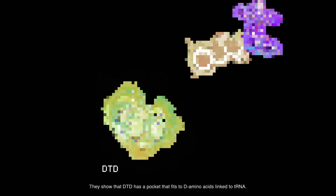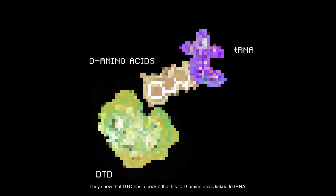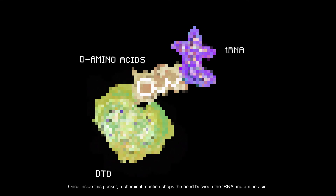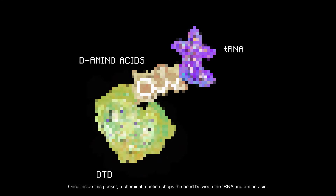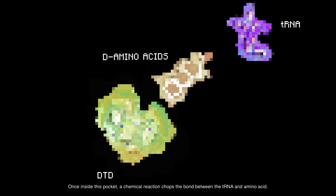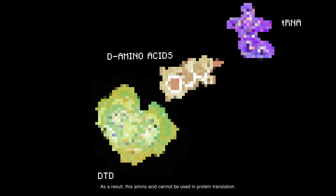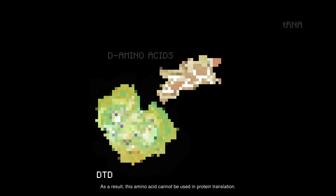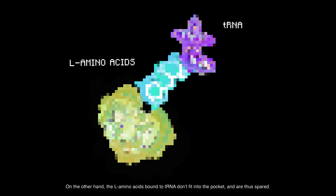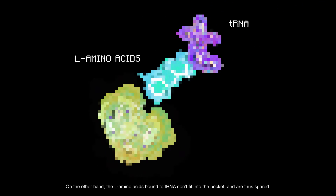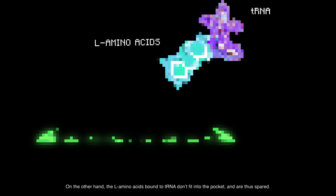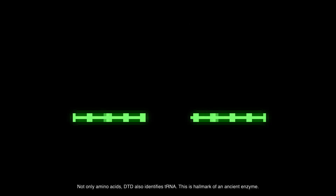They show that DTD has a pocket that fits D-amino acids linked to tRNA. Once inside this pocket, a chemical reaction chops the bond between the tRNA and amino acid. As a result, this amino acid cannot be used in protein translation. On the other hand, the L-amino acids bound to tRNA don't fit into the pocket, and are thus spared.